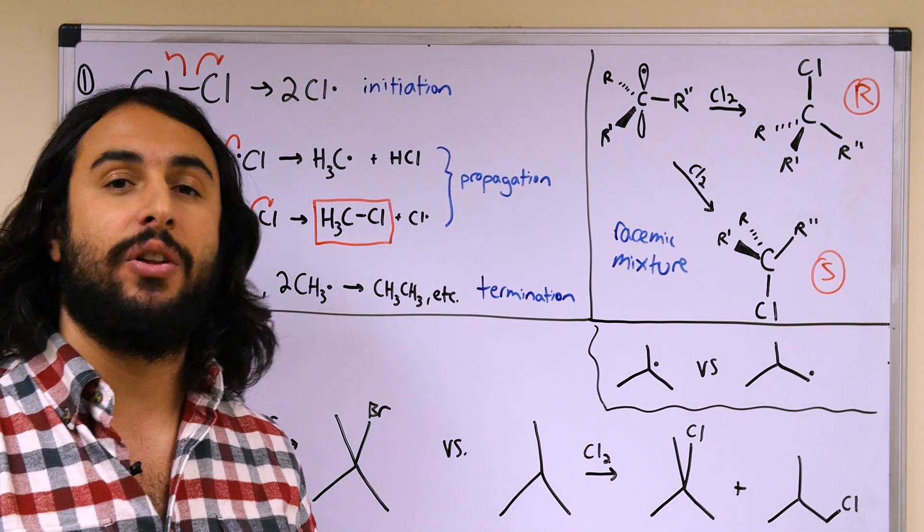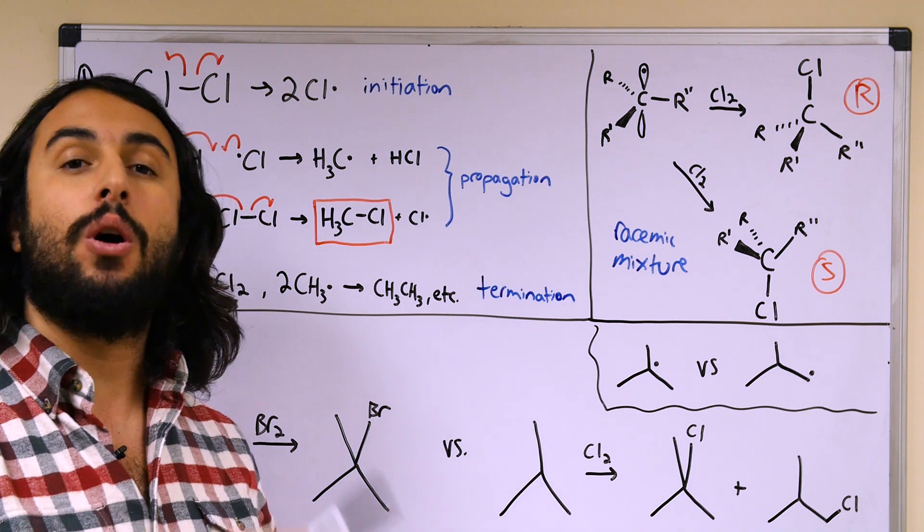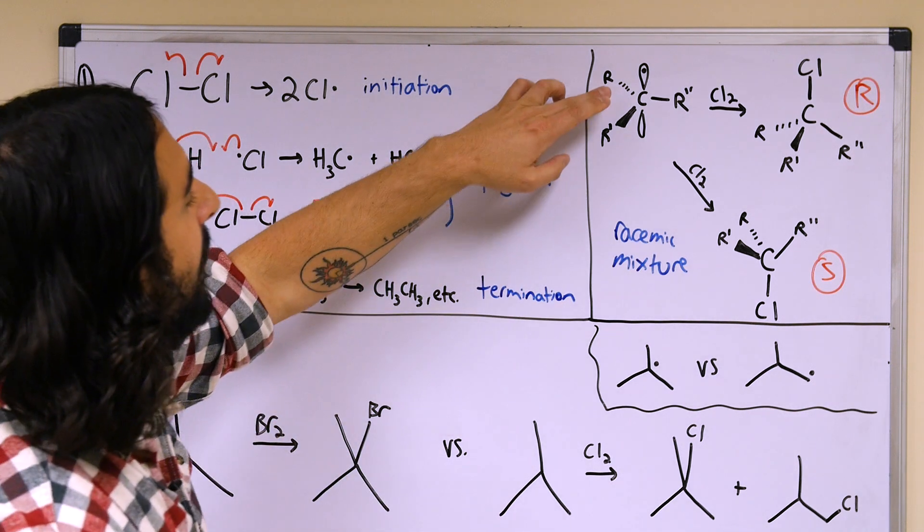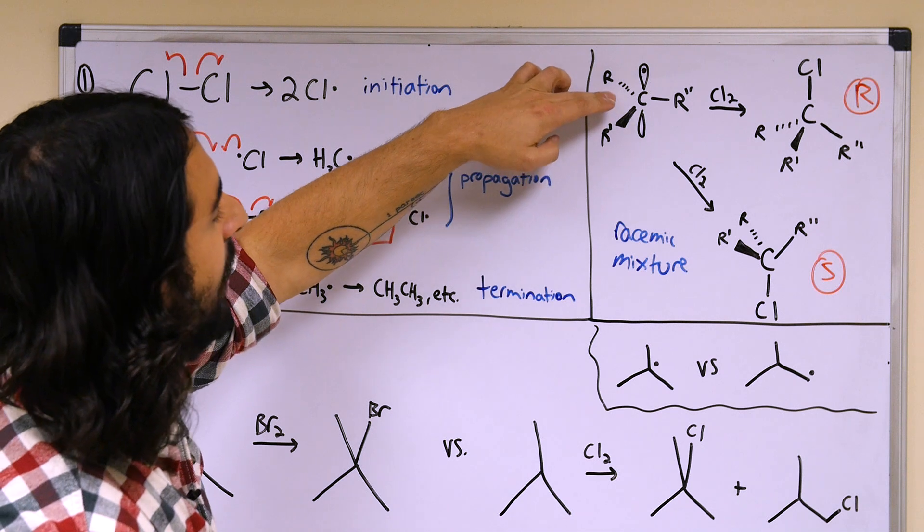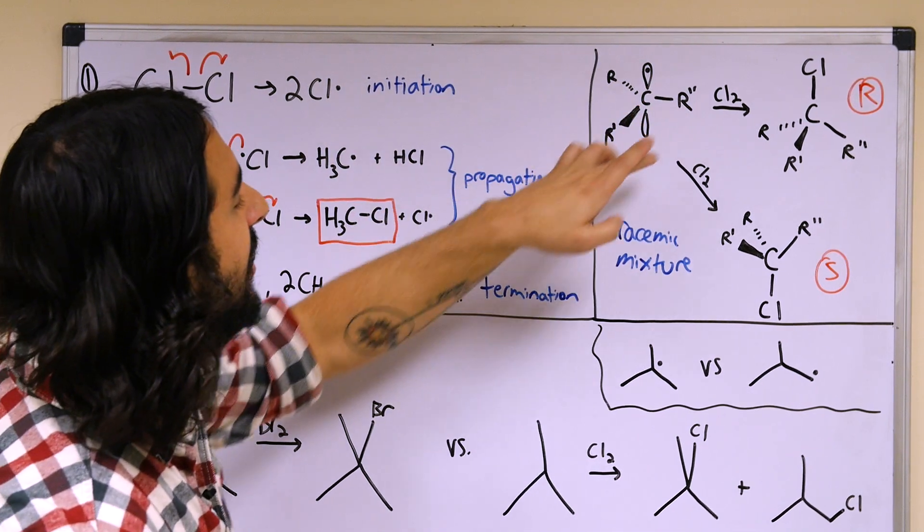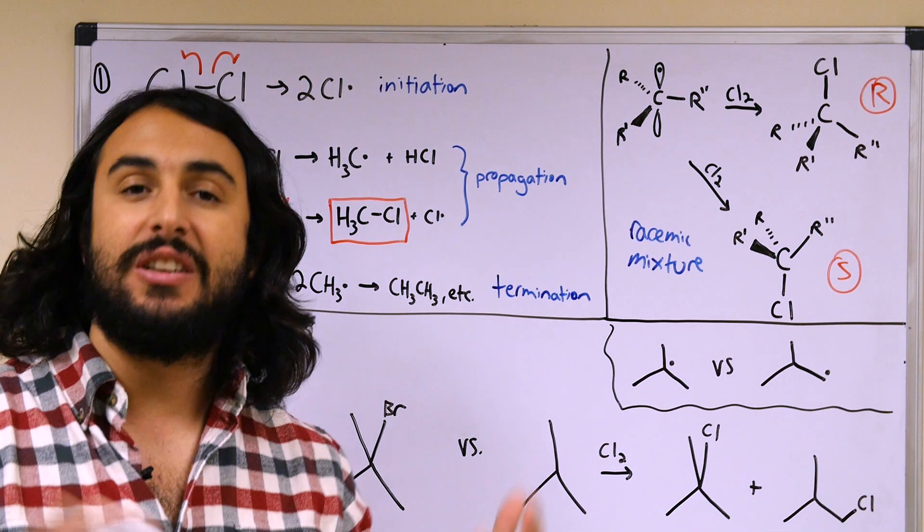Recalling that a carbon radical is also planar and sp2 hybridized, that means that let's say we have this carbon radical and let's say we have three different groups here, three different alkyl groups.